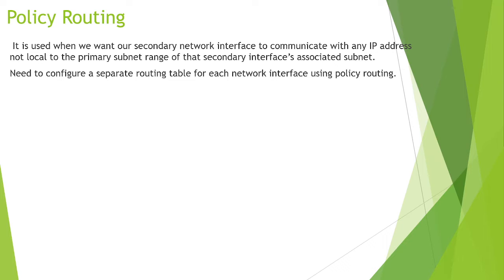There is also a concept called policy routing. It is used when you want your secondary network interface to communicate with an IP address outside of the primary subnet range. For example, if nic1 has the range 192.168.5.0/24 and you want to communicate over the internet using that secondary nic, you need proper routing to be configured.